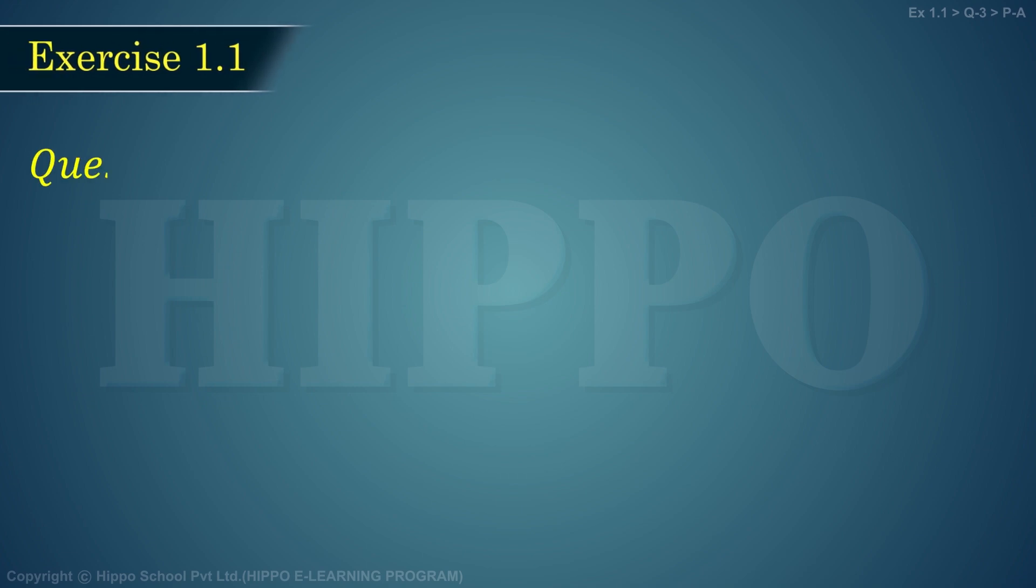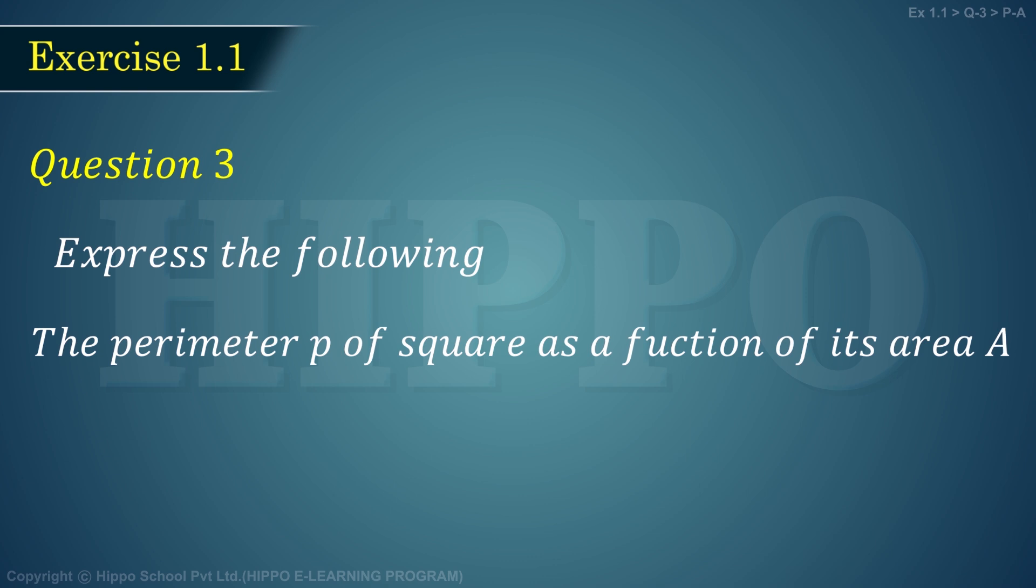Exercise 1.1, question number 3: Express the following - the perimeter p of a square as a function of its area A.